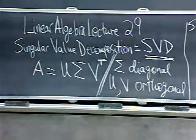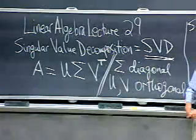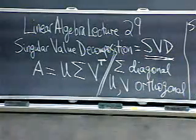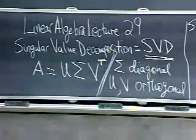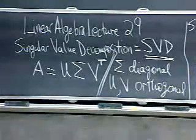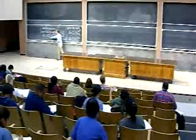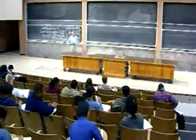This is the lecture on the singular value decomposition — everybody calls it the SVD. This is the final and best factorization of a matrix. The factors will be an orthogonal matrix, a diagonal matrix, and an orthogonal matrix. These are the special good matrices: orthogonal and diagonal.